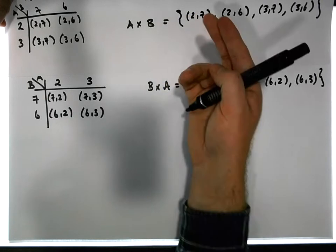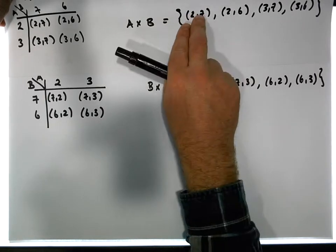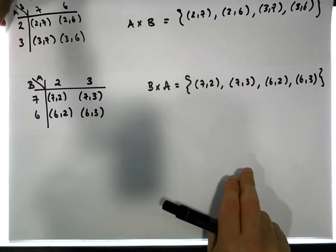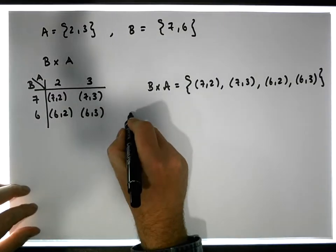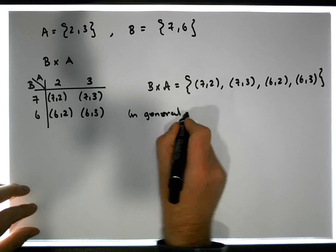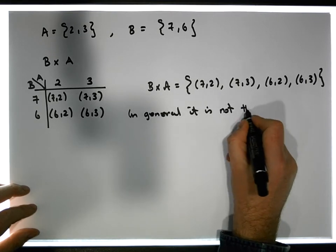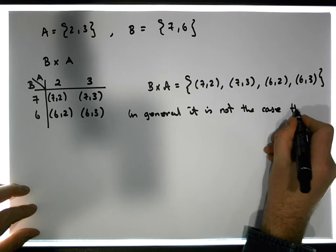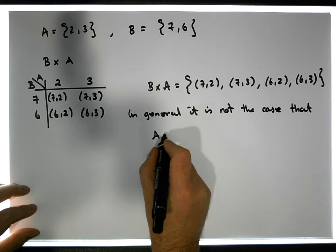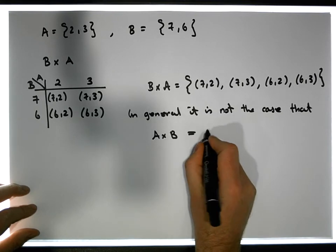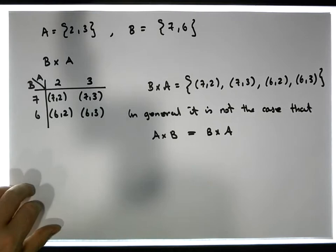They are symmetric, but they are different. So actually, in general, it is not the case that A cross B equals B cross A. So that's not usually the case.